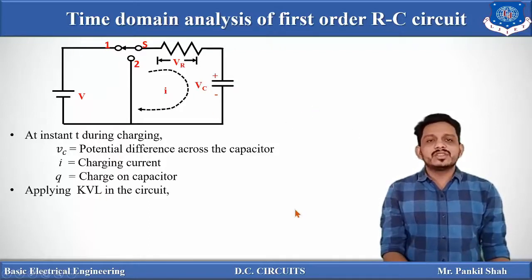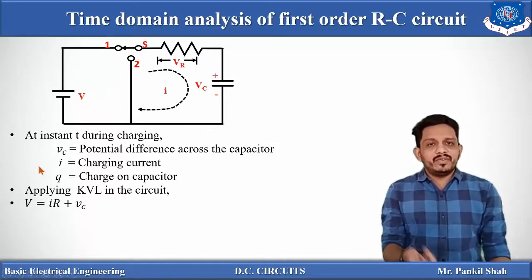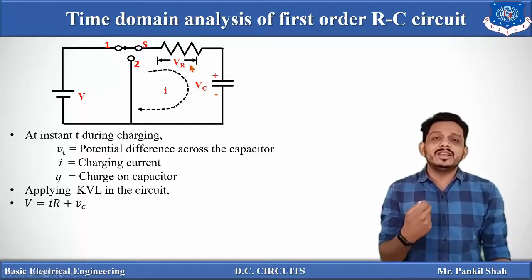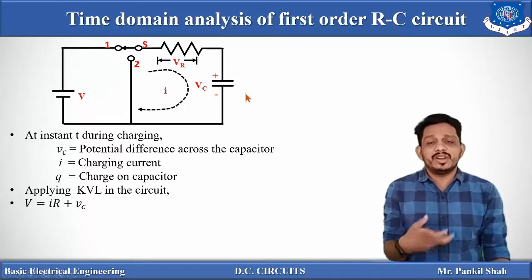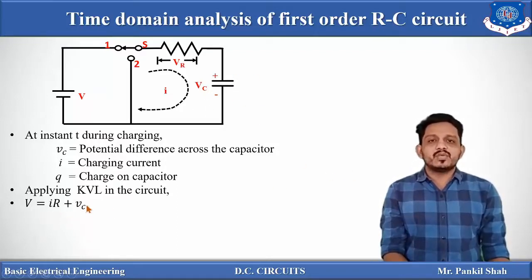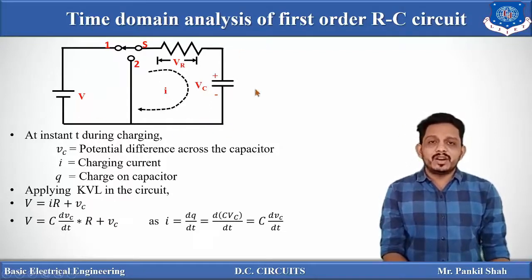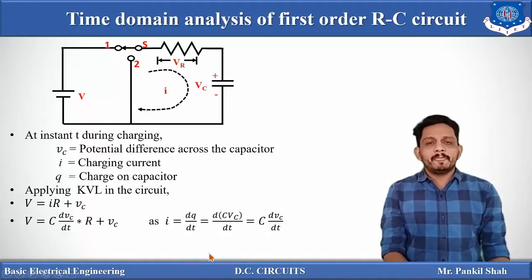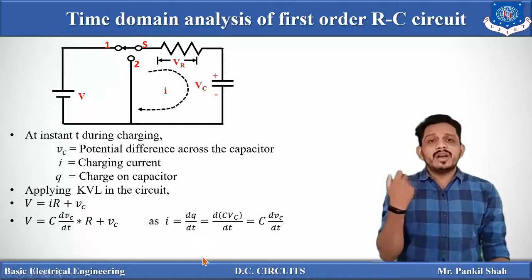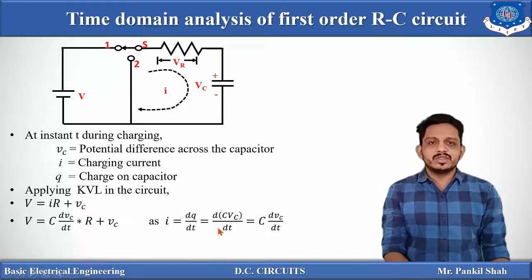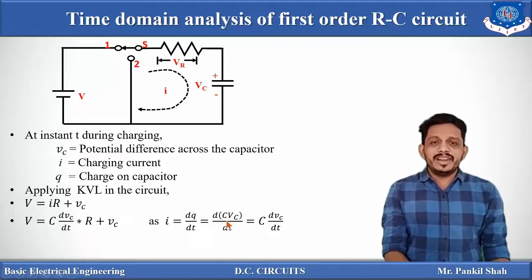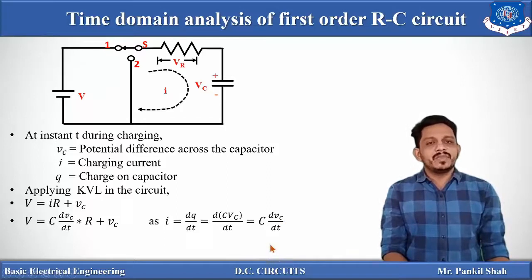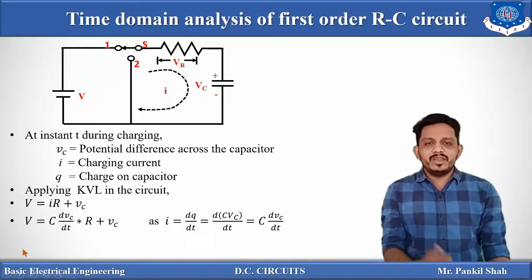Applying KVL to this closed path, the equation will be: the applied voltage V equals voltage across the resistance, which is IR, plus the voltage across the capacitor Vc. So V = IR + Vc. We know that I is charge per time (dQ/dt), and Q = CV. Putting Q = CV into the current expression gives I = C·dVc/dt.